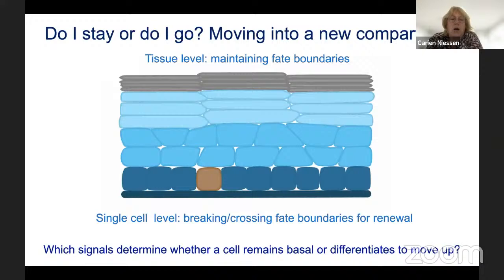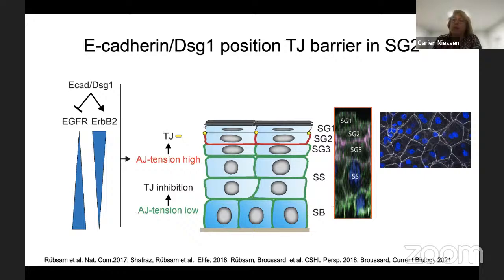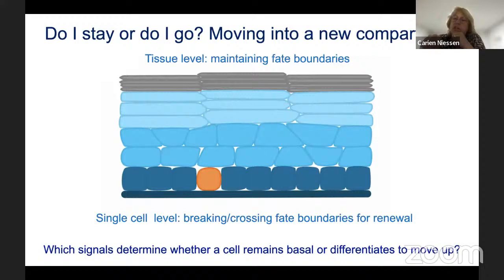What we actually believe is that low adherence junction tension states actively inhibit tight junctions in part by controlling tyrosine kinase receptor signaling. We still don't know what the switch is to go to an adherence junction tension-high state, but this results in very efficient inhibition allowing tight junctions to stabilize and properly position within the tissue — placing the barrier spatially where you want it.